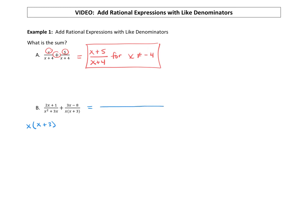Our denominator will stay the same. I'm just going to leave that as x times x plus 3. Our numerator is, we have this 2x plus 1 plus the other numerator, 3x minus 8.